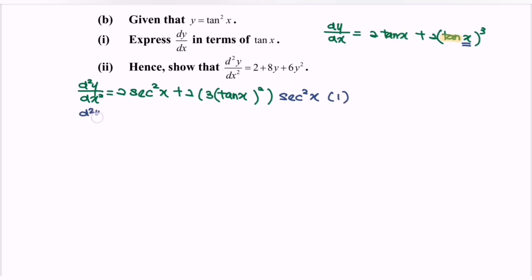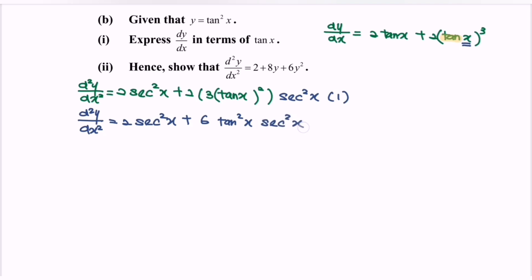Rewrite the situation. So the second derivative equals 2 sec squared x plus 6 tangent squared x multiplied with sec squared x. Kindly substitute: sec squared x equals 1 plus tangent squared x.